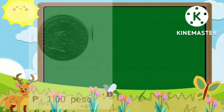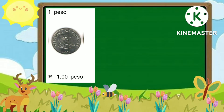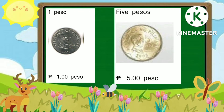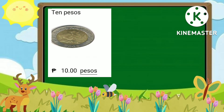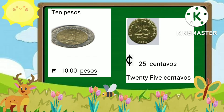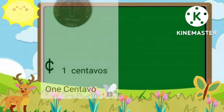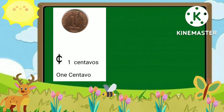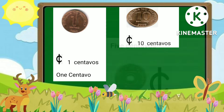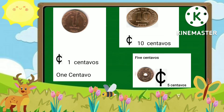Now, I want you to look at the coins or the centavos in Philippine money. This is the P1 peso. The next Philippine money is the P5 pesos. What we can see now is the P10 pesos. The next coin is the P25 centavos. The next coin is the 1 centavo. The next coin that we can see now is the P5 centavos.